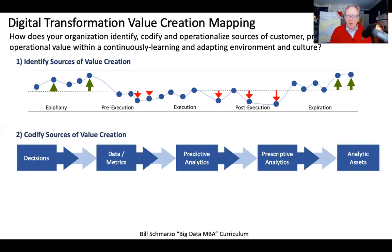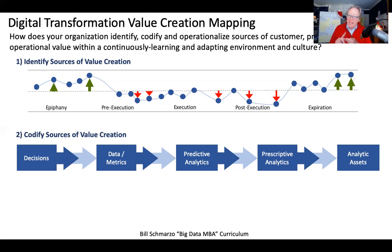Number two is to codify those sources of value creation. This is all about data science — AI and machine learning — building reusable, continuously learning and adapting analytic assets. Those analytic assets take the form of analytic profiles: the detailed profiles we build on individual humans — consumers, doctors, technicians, operators — as well as individual devices like wind turbines, compressors, chillers, and clutches. The codifying stage is about engineering models and analytic profiles that we can use to help capture all those insights about where customers are building value.